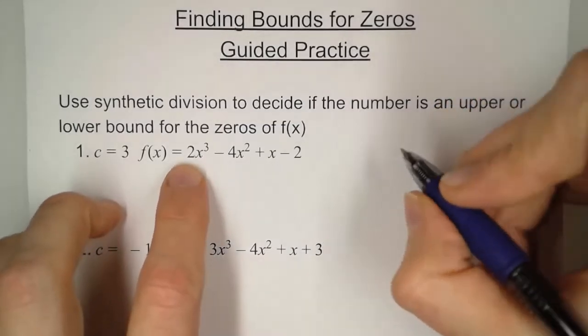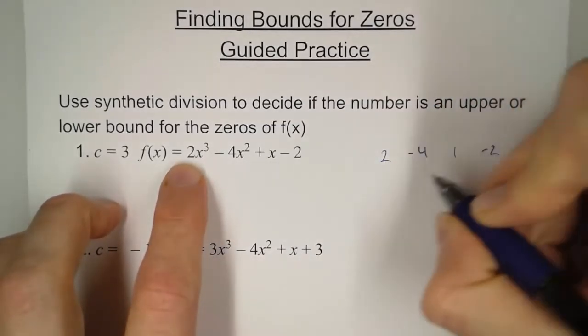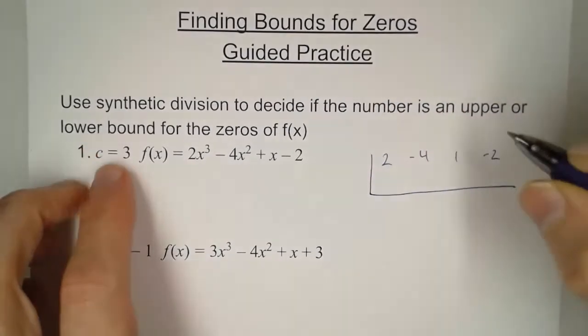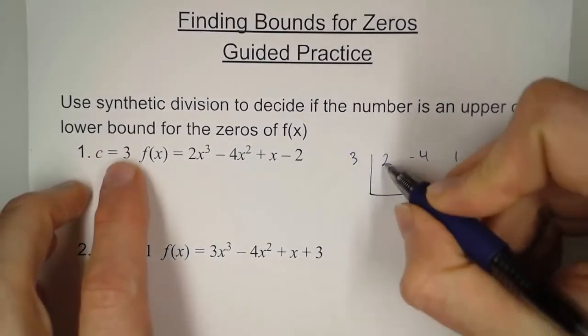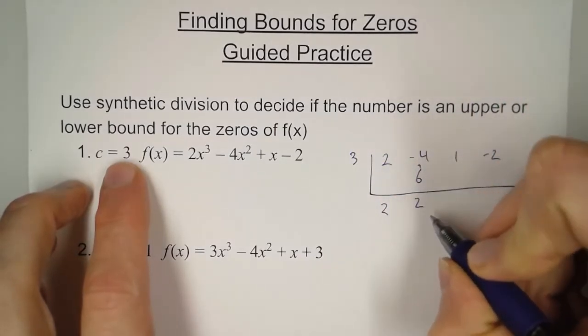So let's do this one. We got 2, negative 4, 1, negative 2, and our guess is 3. So bring down the 2, times 3 is 6. Add these two, we get 2.